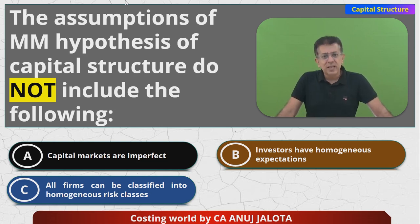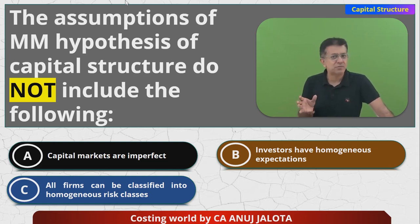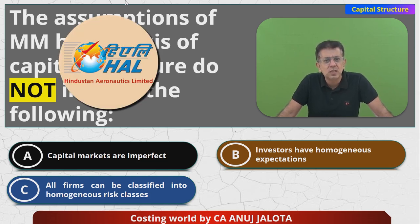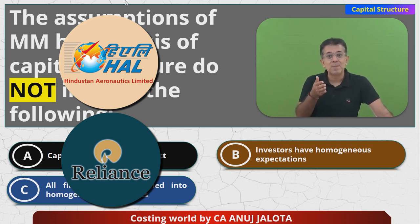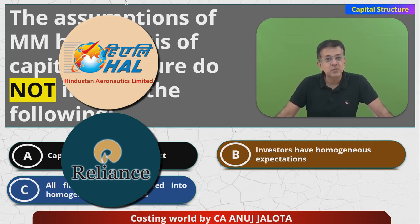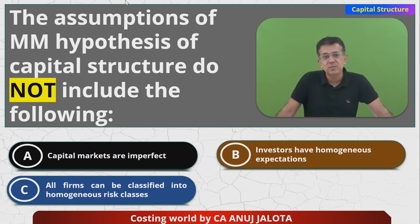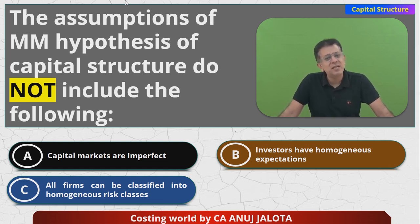Modigliani and Miller — you should understand that every company is different and has different risks, and therefore different rewards. For example, Hindustan Aeronautics Limited (HAL) is in the defense sector, so in case of wars this company has maximum chance of growing because there'll be more orders from the Government of India and export markets. But Reliance is mainly in consumer goods, petro, or Jio. So risks are different. When assumption C says all firms can be classified into homogeneous risk class, MM simplified their theory by assuming all companies have similar kinds of risk.